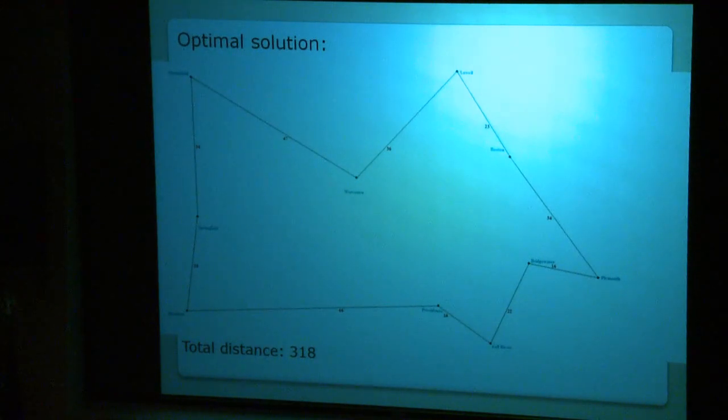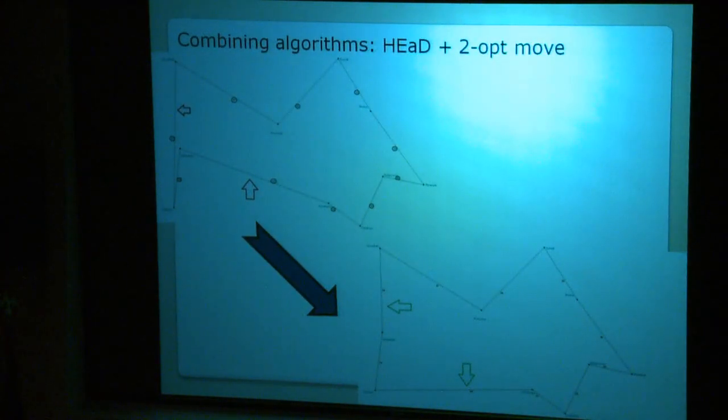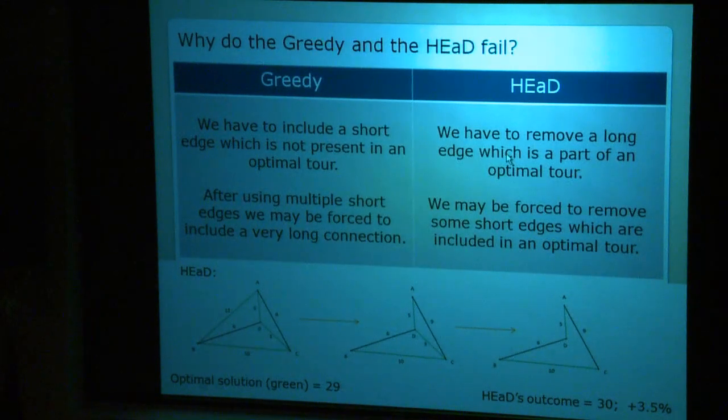And so, what mathematicians do in cases like that, they try to combine their own algorithms, trying to come up with something that will provide us an optimal solution. Again, we combine HEaD with two-opt moves, so remove those two edges that we don't want, and then identify that alternative connections actually would move us to optimal solution. So actually, what goes wrong in greedy and in HEaD? Well, with the greedy algorithm, once the problem is we don't always want to include the shortest edges.